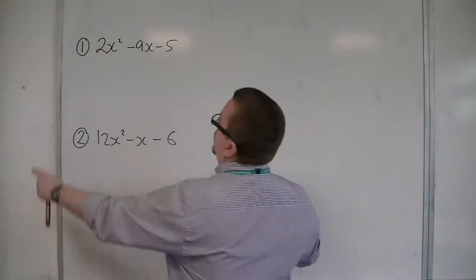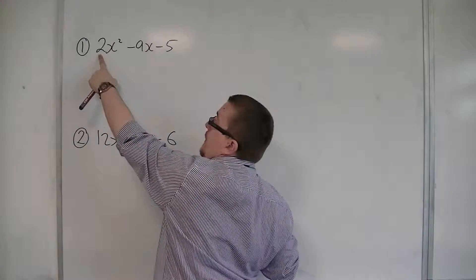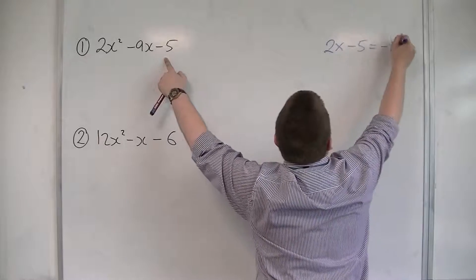So what we're going to do is multiply the 2 by the minus 5. So you multiply the coefficient of x-squared by the constant term. So 2 times minus 5, that gives me minus 10.